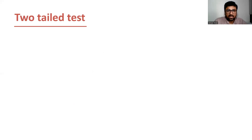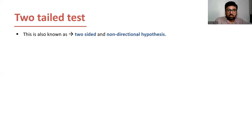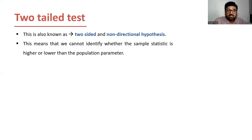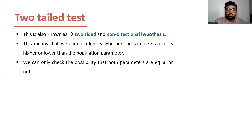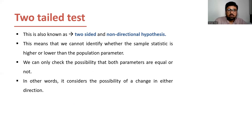Now let's look at the two-tailed test. The two-tailed test is known as a two-sided or non-directional hypothesis. This means that we cannot identify whether the sample statistic is higher or lower than the population parameter. We can only check the possibility that both parameters are equal or not. It considers the possibility of a change in either direction — the sample statistic can be higher than or lower than the population parameter.